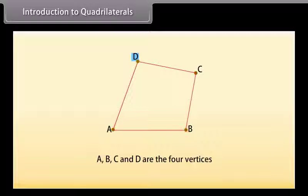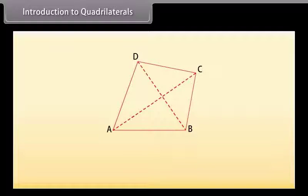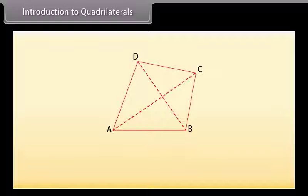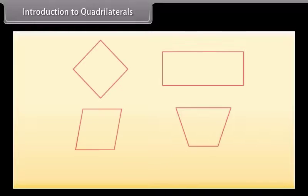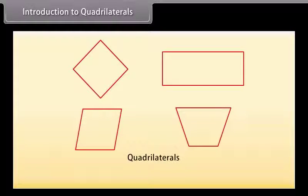Now what will happen if we join its opposite vertices? If we join vertices A to C and B to D, we get the diagonals. So AC and BD are the diagonals. Look at these shapes — they are all quadrilaterals because they have four sides, four angles, and four vertices.